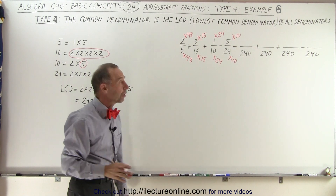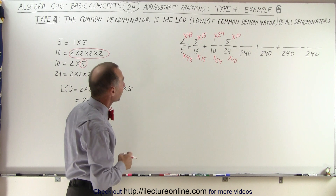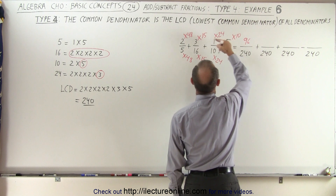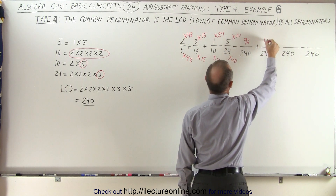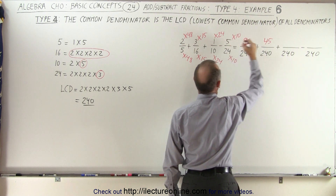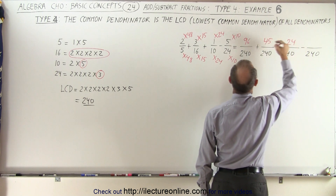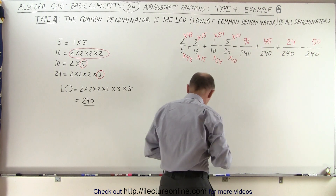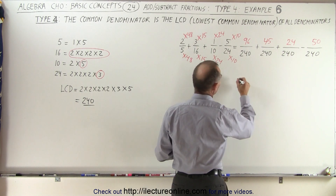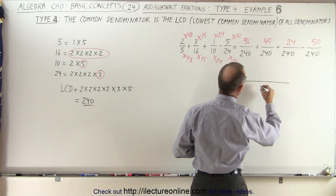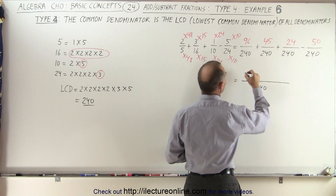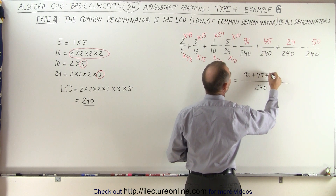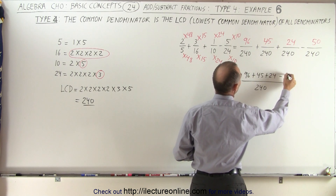That's how we get our new corresponding numerators. 2 times 48 is 96. 15 times 3 is 45. 24 times 1 is 24. And 10 times 5 is 50. Now we can combine everything over one common denominator of 240.